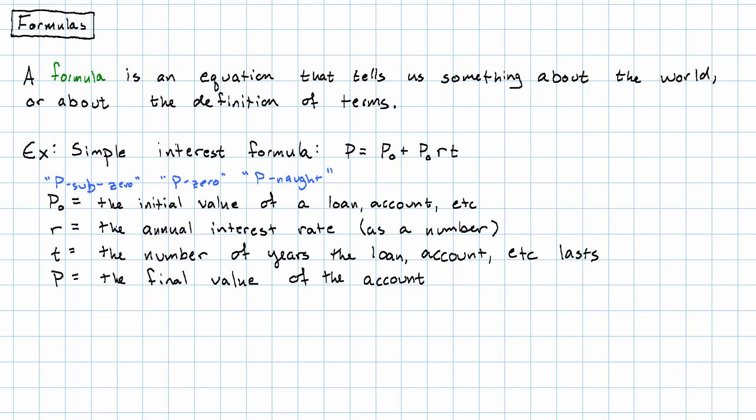R is the annual interest rate. T is the number of years that the loan or account or whatever lasts. And P is the final value of the account. So this is telling me what simple interest is and how it works.